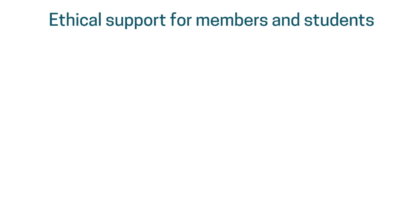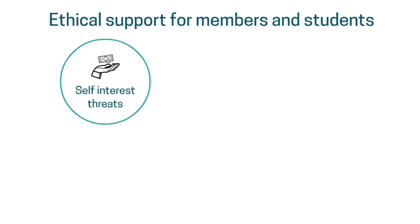Firstly, there are self-interest threats. As the name suggests, this is any potential circumstance which might influence you personally and therefore impact on your decision making. This could include financial interest and incentives, concerns about your employment security, or the impact of a decision or action on your position. Or it could be commercial pressure from other businesses. For example, you might be motivated to act unethically if you're given a financial incentive — a bonus perhaps — for agreeing to leave key information out of a financial report.